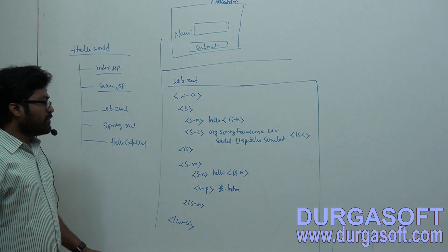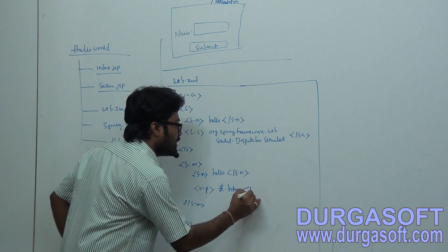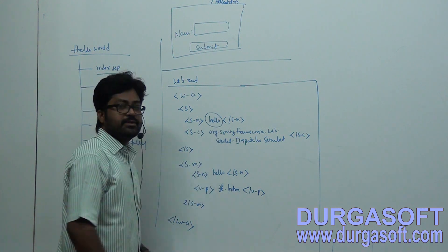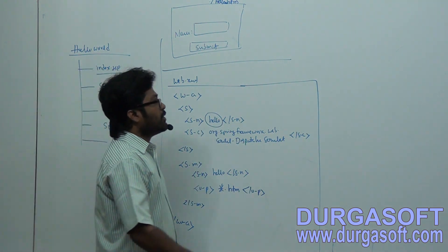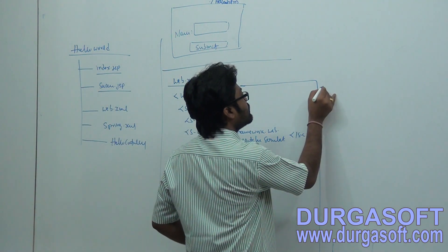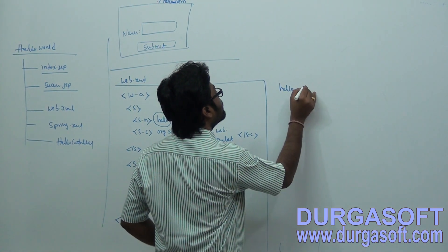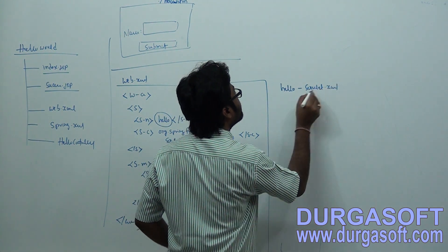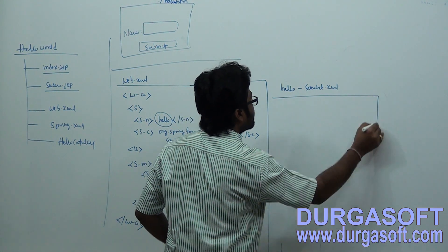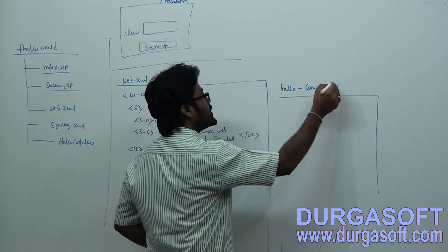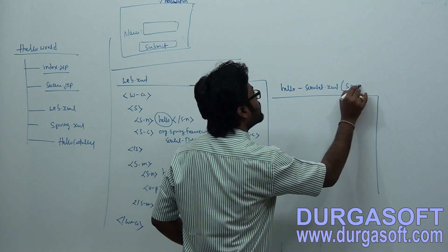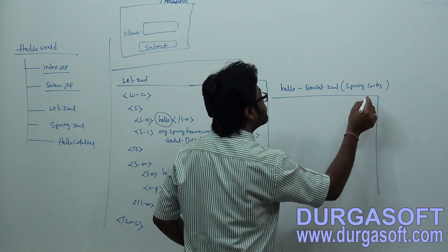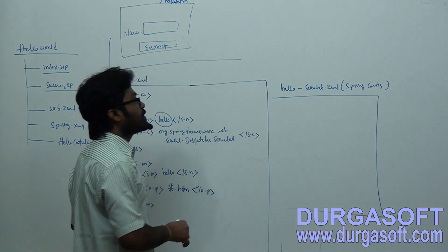Then we require one spring.xml file. That spring.xml file name should be created using the same servlet name — 'hello' — so your spring.xml file name should be hello-servlet.xml. This is actually your spring.xml file where you can do Spring configurations.